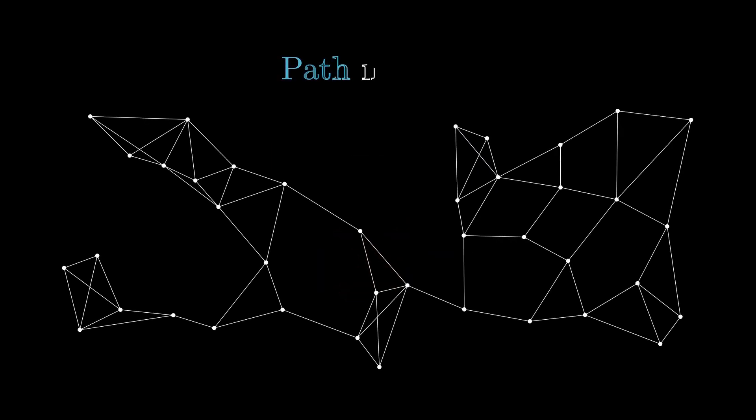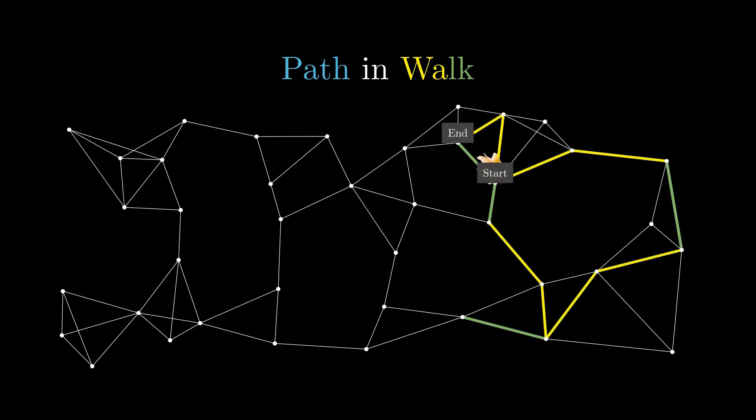Interestingly, every walk contains a path. Look at these examples, where green trail means that the edge is traveled more than once. Every walk from a starting vertex to an end vertex contains a path from the same starting vertex to the same ending vertex.